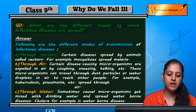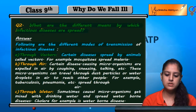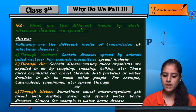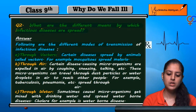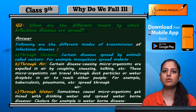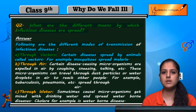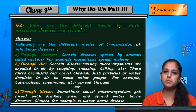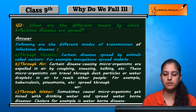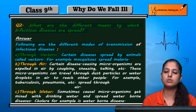Certain diseases spread by animals called vectors. Vectors can be insects or any living animal or insect. For example, mosquitoes spread malaria, which is a vector mode of transmission. Rabies is spread by a dog. These are examples of vector-borne infectious diseases.